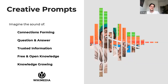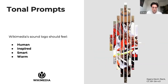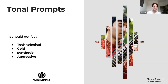Creative prompts to get started: imagine the sound of connections forming, question and answer (call and response), trusted information, free and open knowledge, and knowledge growing — one idea expanding and growing over time. Tonal prompts describe how the logo should feel: human, inspired, smart, and warm. We're looking to avoid anything that feels too technological, too cold, synthetic, or aggressive. Keep referring back to these terms to stay on track.